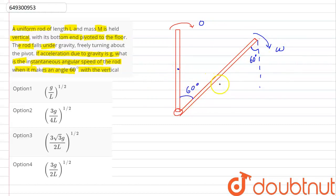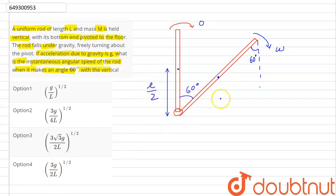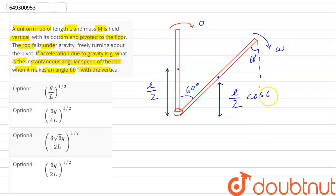Initially the center of mass was at the top, but now it has moved. The height of the center of mass is L/2 cos θ, because the rod extends from pivot point A to end B. This L/2 component gives us the potential energy term.